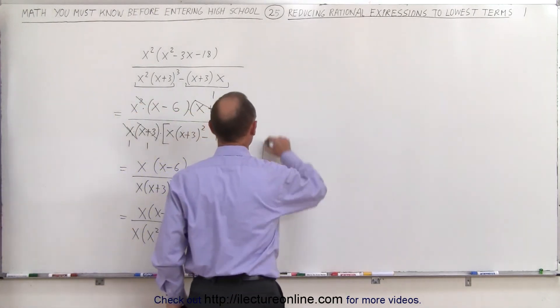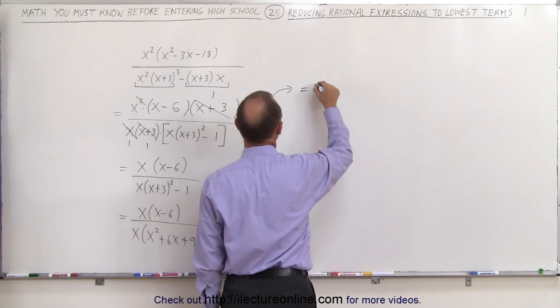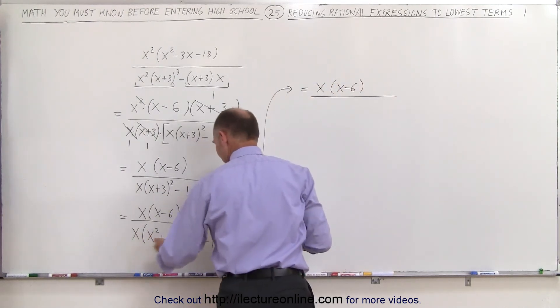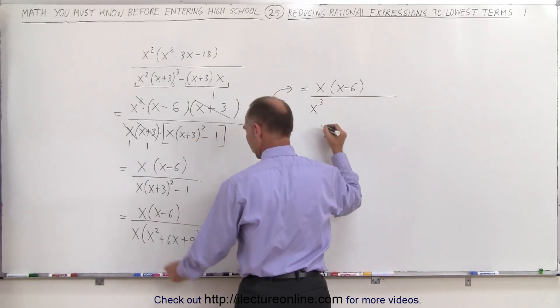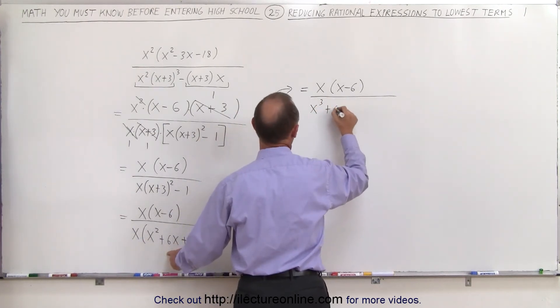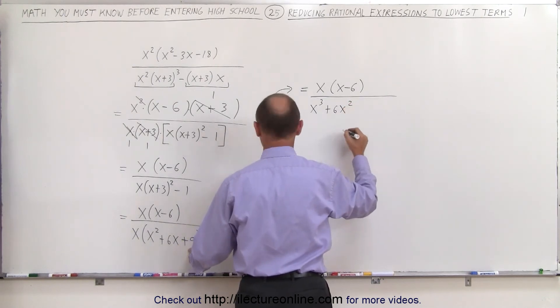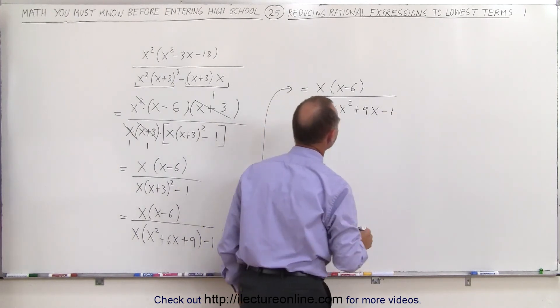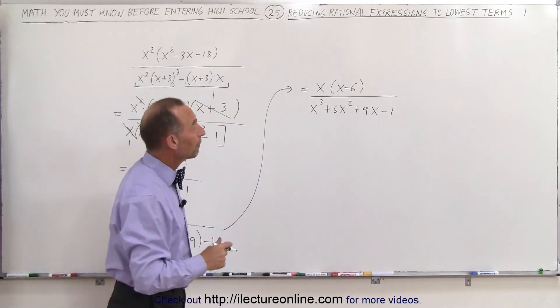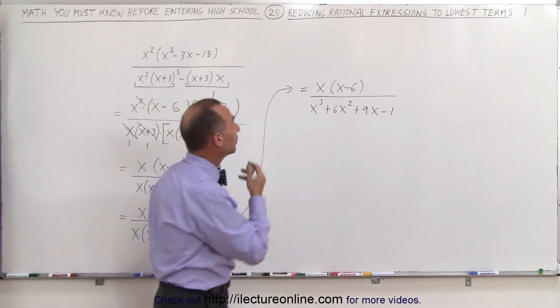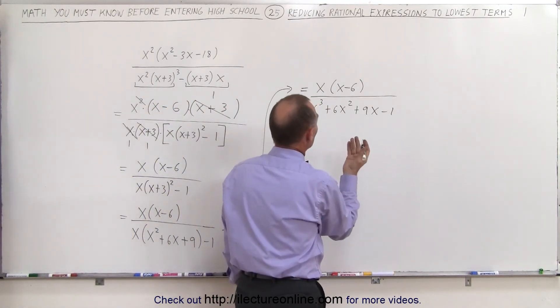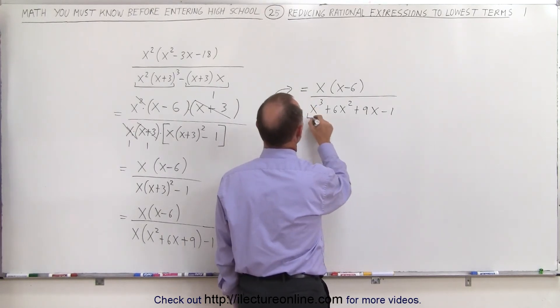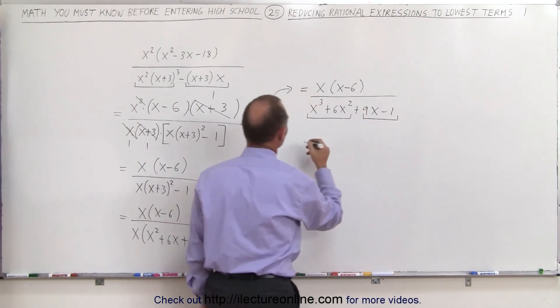So, continuing on over here, the numerator stays as x times x minus 6, and in the denominator, when I multiply this together, I end up with an x cubed plus 6x squared plus 9x minus 1. Alright, let's continue now by, hmm, let's see here. Here, I can group them together, and it should not matter which way I group them together. I can perhaps group them together like this, and like this. If I do that, see what I end up with.